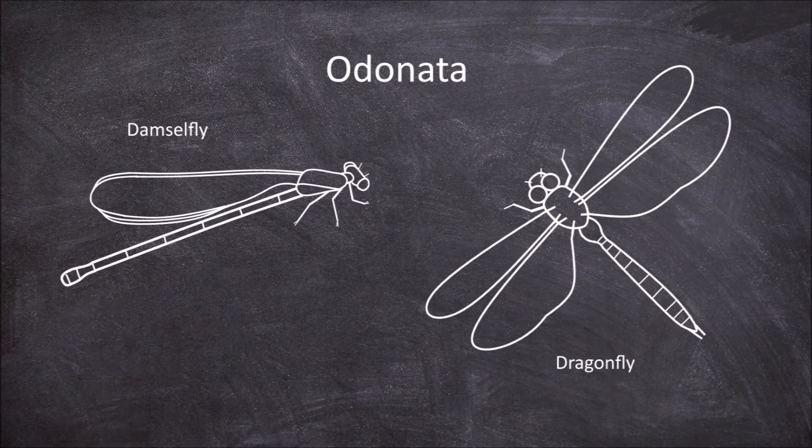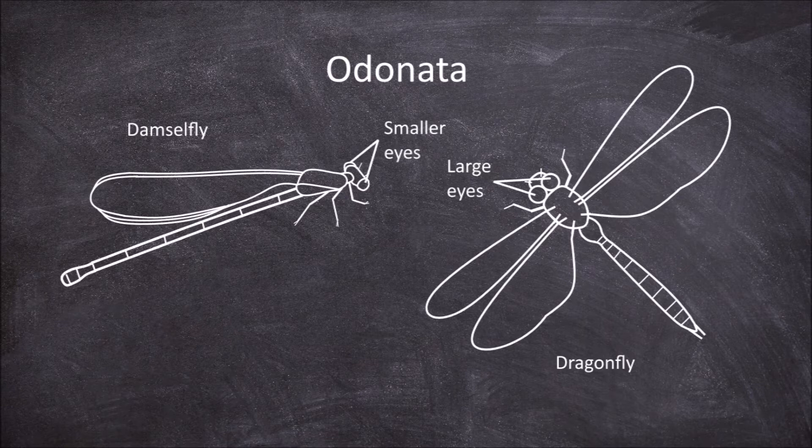If we look at the adult forms there are two main features that are helpful in distinguishing the two groups. The first of these features are the eyes. In dragonflies the eyes are large and often touch in the centre, covering much of the front of the face. Damselfly eyes on the other hand are much smaller and are positioned apart from each other on each side of the head.